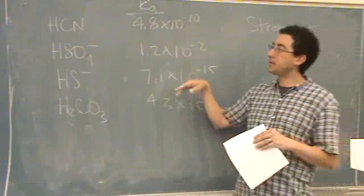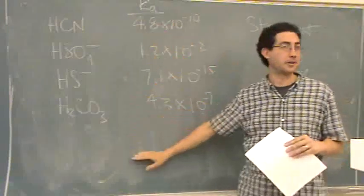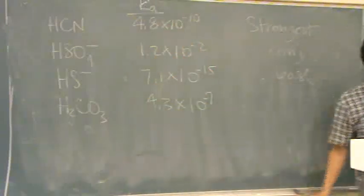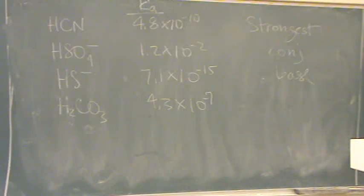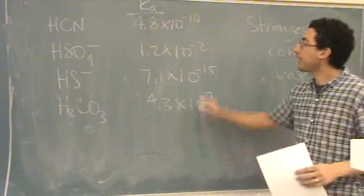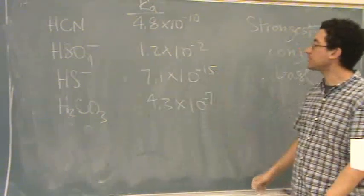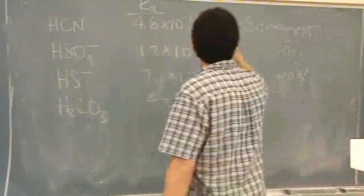And there's really five possibilities. One of these four, or you can pick none of the above. So, these are all Ka values. Which one's going to be the strongest acid? I'll label them in the acid strength.